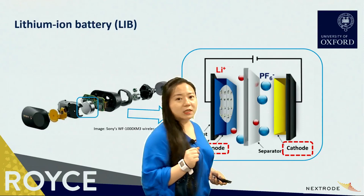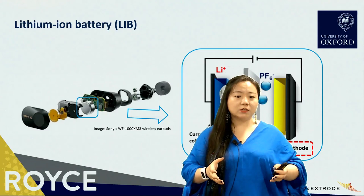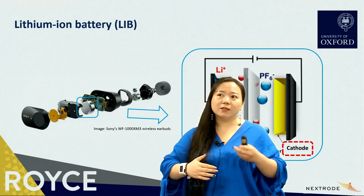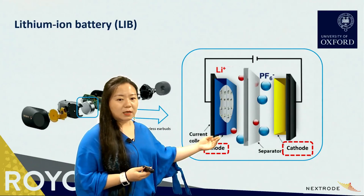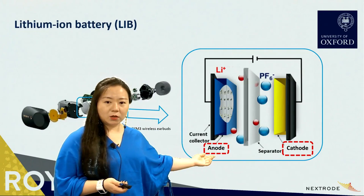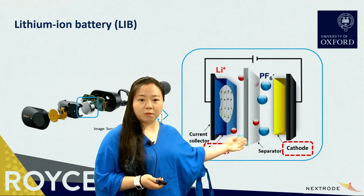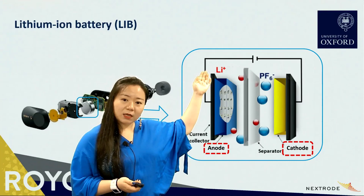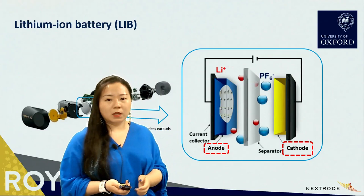Let's start from a daily application of the lithium ion battery. For those of you who use a wireless earbud to watch this video, there is actually a piece of lithium ion battery inside. Now let's zoom in and take a close look at this battery. There is a piece of cathode, normally a lithium compound; a piece of anode, normally graphite; a porous separator as a physical barrier between the two electrodes to avoid short circuit. We also have the lithium ion conducting electrolyte and current collectors from both sides.